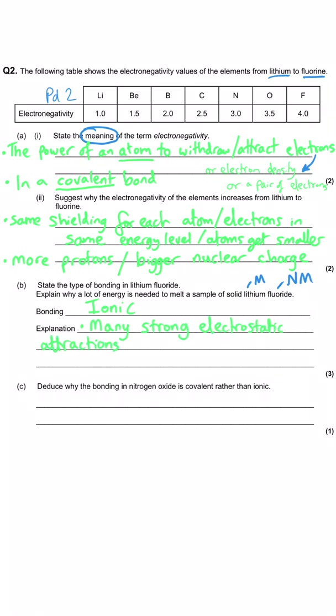Then the explanation: a lot of energy is needed to melt the solid lithium fluoride so we need to say that there must be strong electrostatic attractions between the ions. We need to also communicate that we know lithium will be positive and fluoride will be negative, or we could just be very general and say between positive and negative ions.